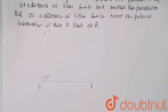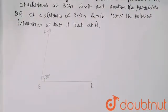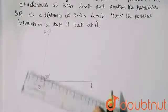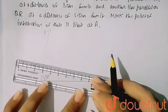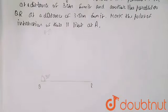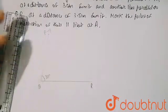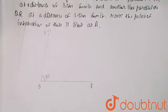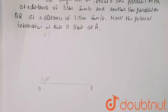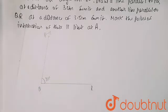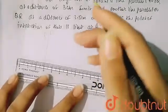Now in the question, it is given to draw a line parallel to PQ at a distance of 3 centimeters from it. This line is PQ, so here you can measure 3 centimeters. This is my 3 centimeter distance, and from this a parallel line will be passing like this. This is my parallel line — it can be extended further. The distance between these lines is 3 centimeters.